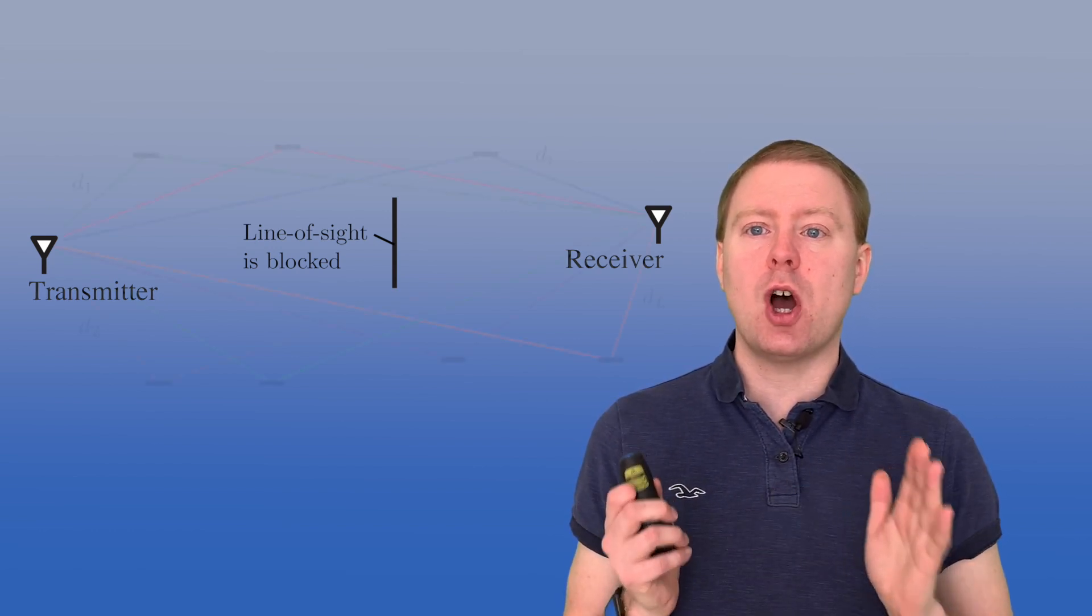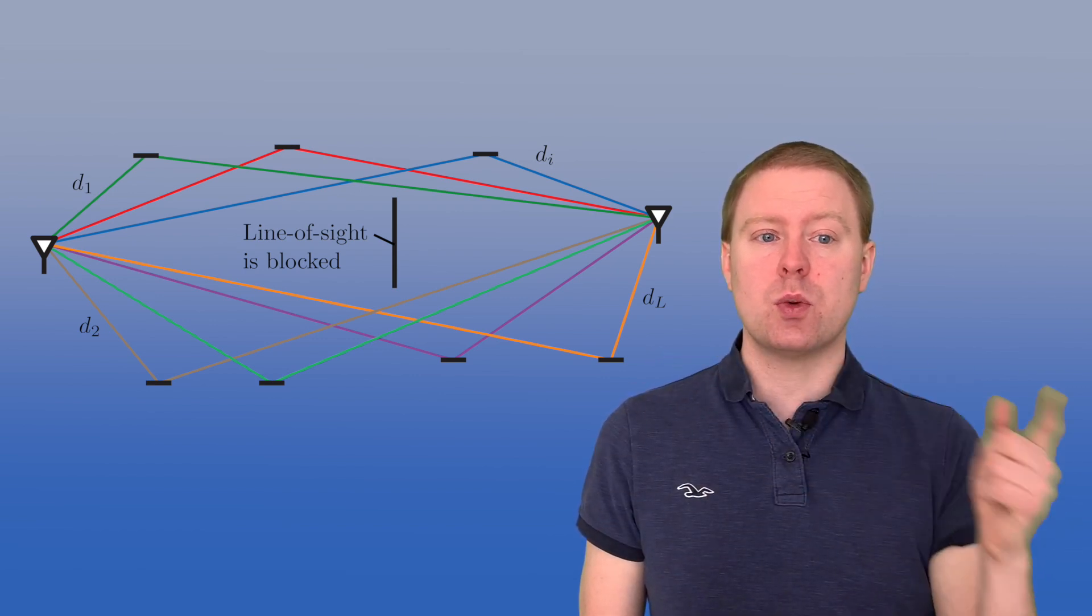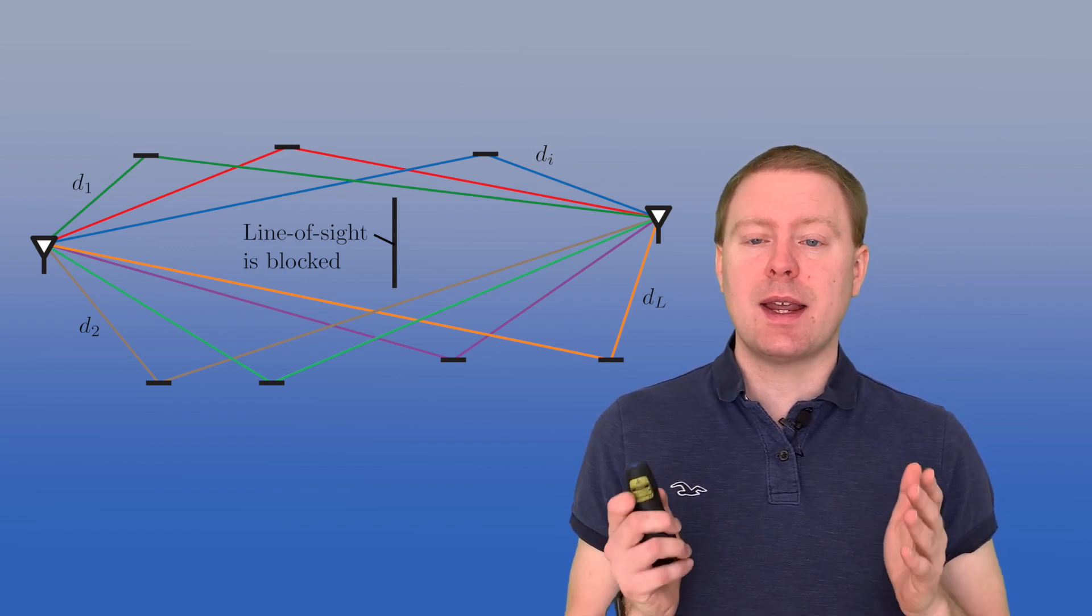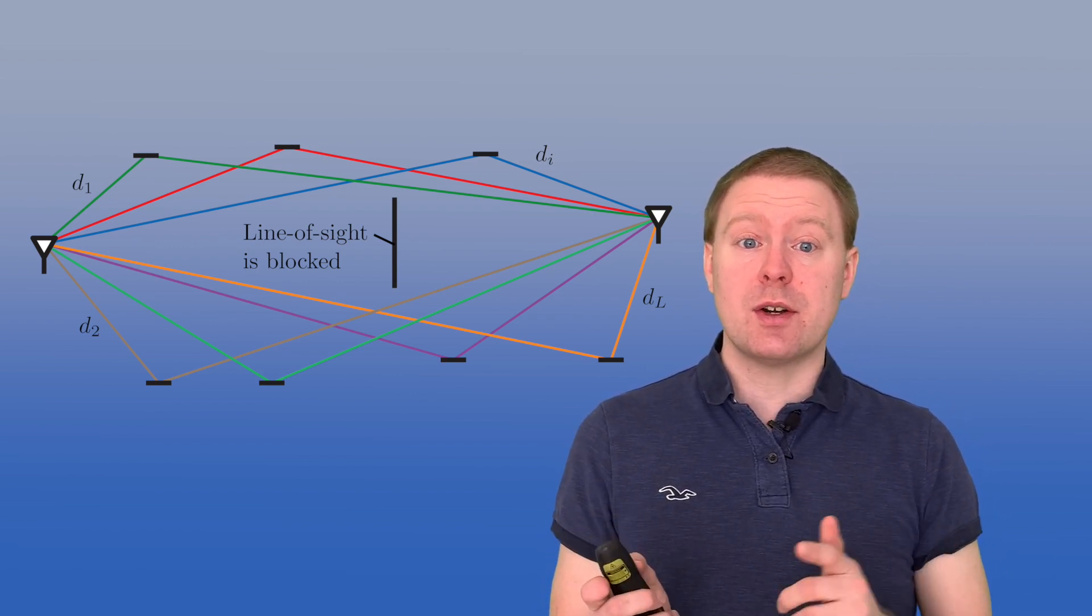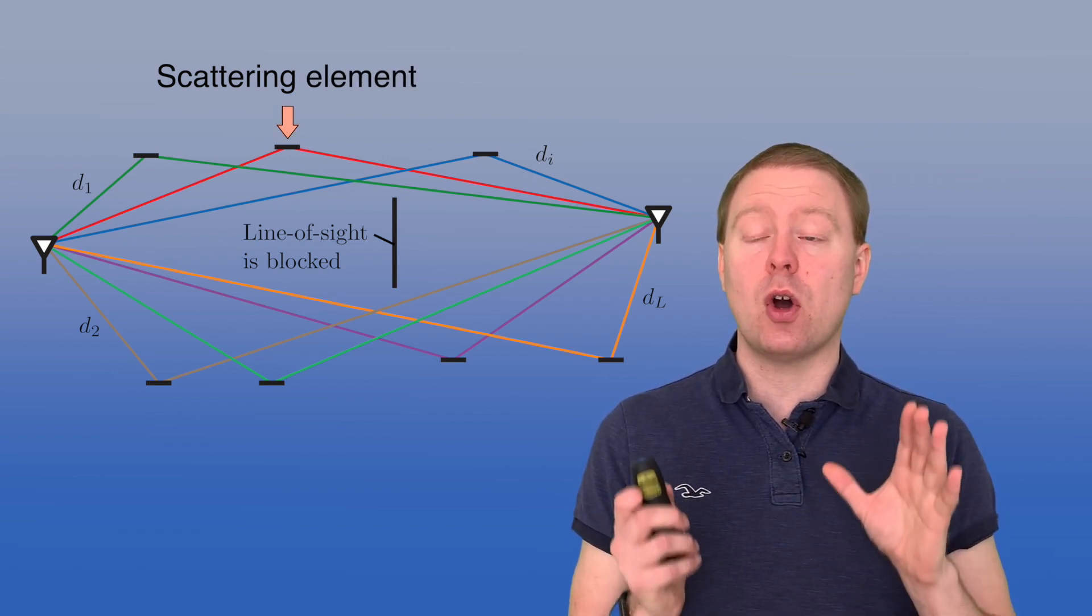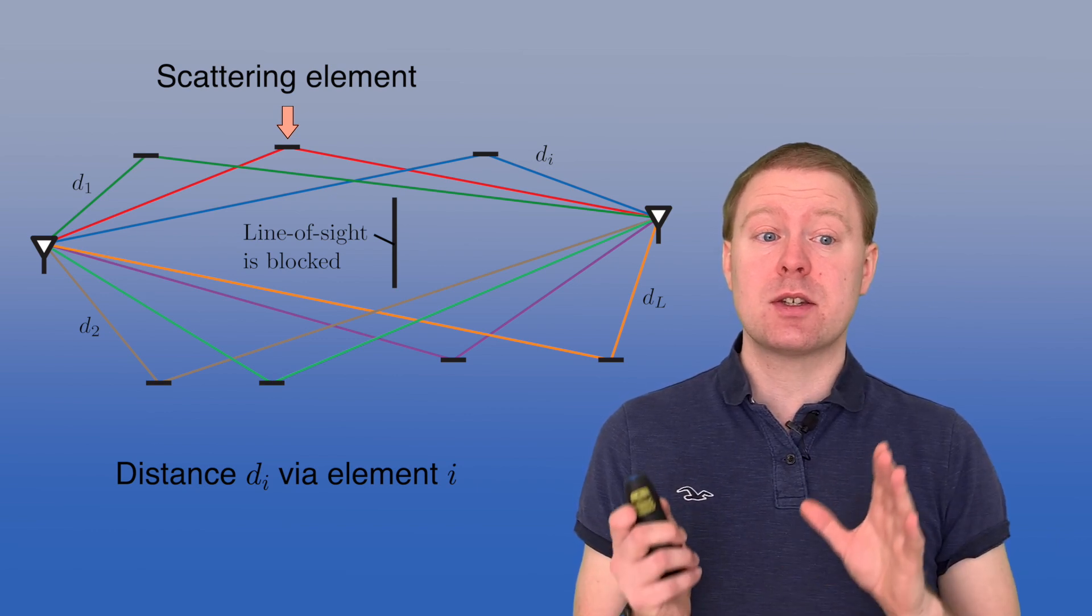However, there are various objects in the propagation environment that can scatter the signal going from transmitter towards the receiver. So in this figure here, you see that even if the transmitter and receiver can't see each other, they can all see the same scattering elements and therefore there are all these colored paths, all of them having slightly different propagation distances to the receiver.